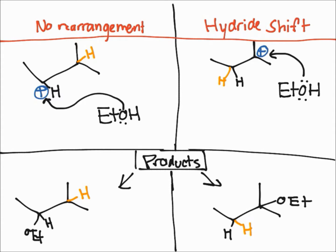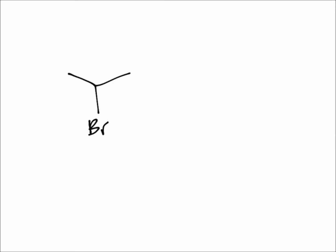That was the hydride shift, where a hydrogen shifts. Now we're going to talk about an alkyl shift, where a CH3 or methyl group shifts instead of the hydrogen. For a typical alkyl shift, you could essentially redo what I did, but instead of the golden hydrogen, just place a CH3 or methyl group off of that carbon. I'm going to do a harder alkyl shift problem.